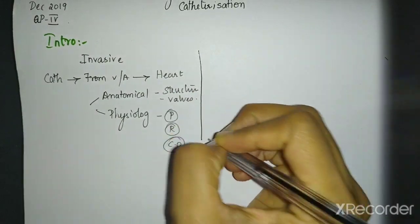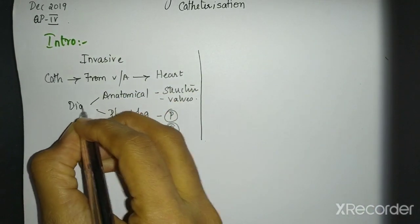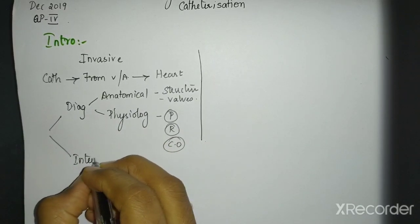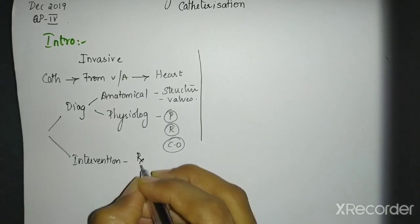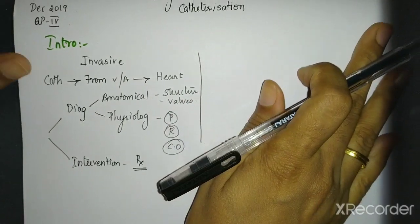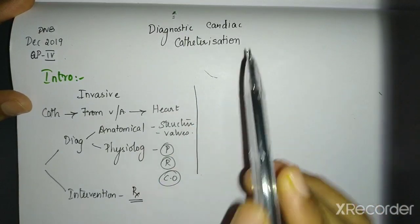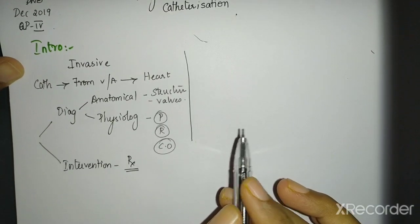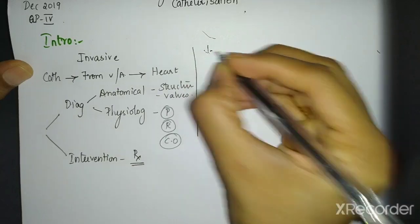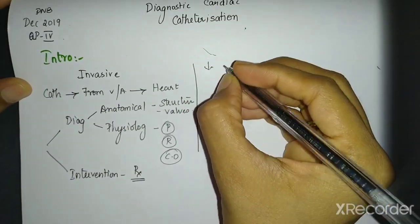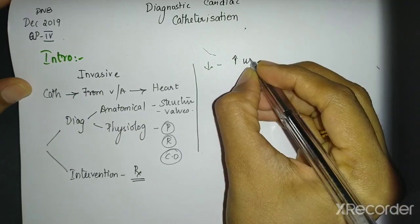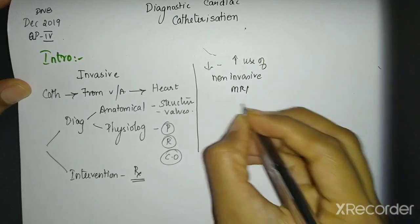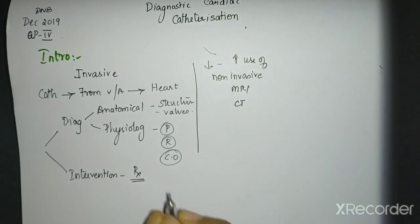So this catheterization is of two types. It can be diagnostic or interventional. Interventional as the name suggests is for treatment. The question here for the exam is diagnostic cardiac catheterization. So we will be just limiting us to diagnostic modalities alone. This will be your introduction but now the incidence or the use of diagnostic cardiac catheterization is coming down because of increased use of other non-invasive modalities like MRI and cardiac CT.